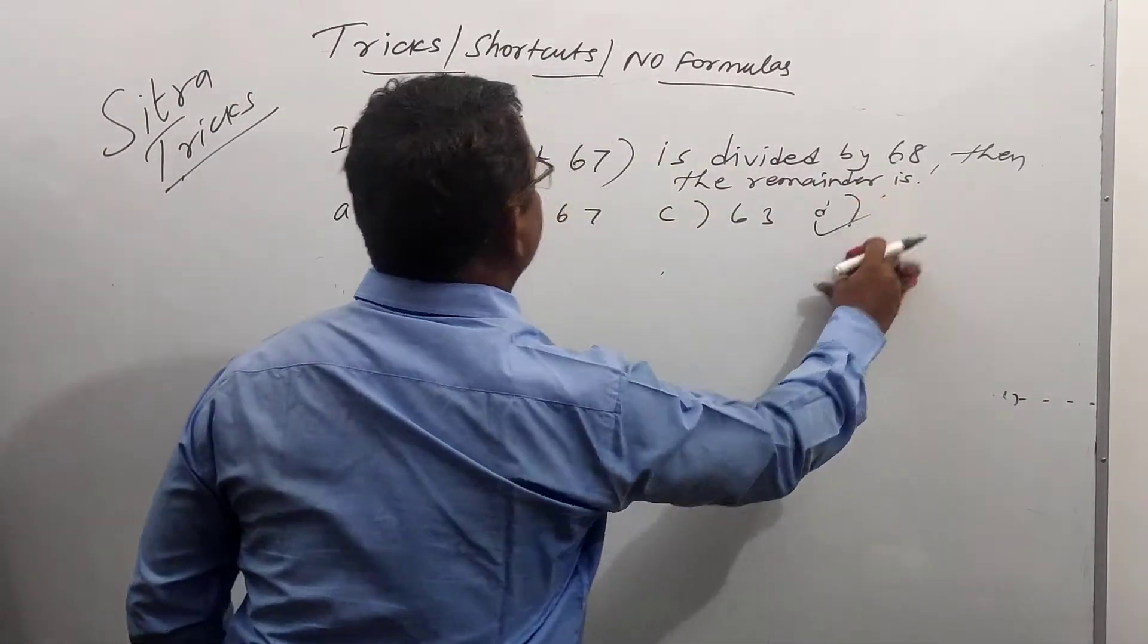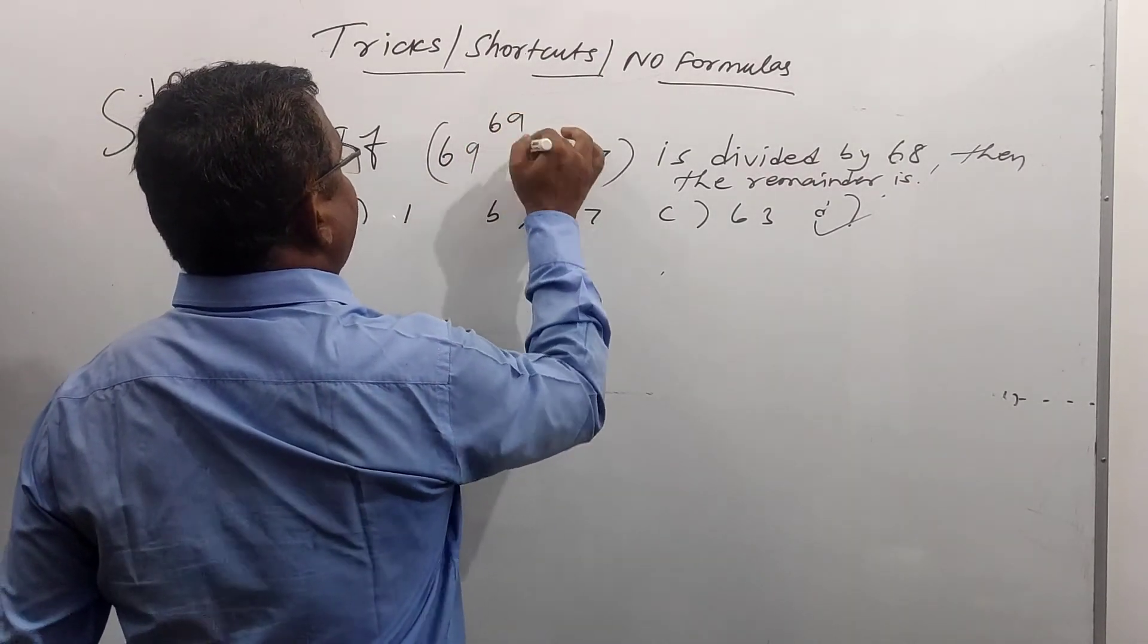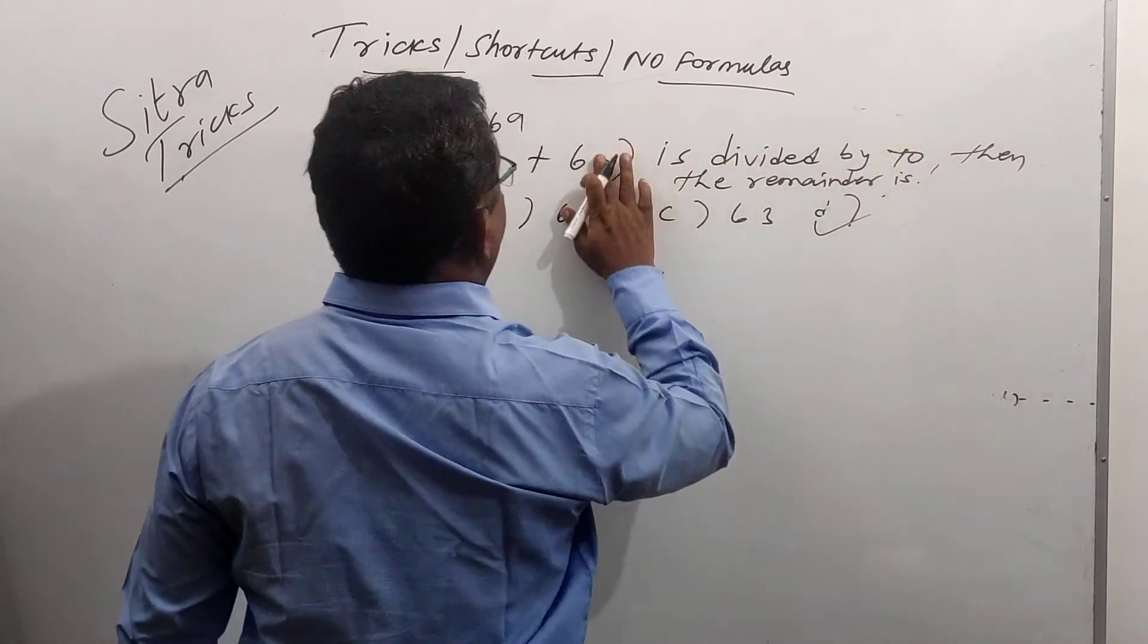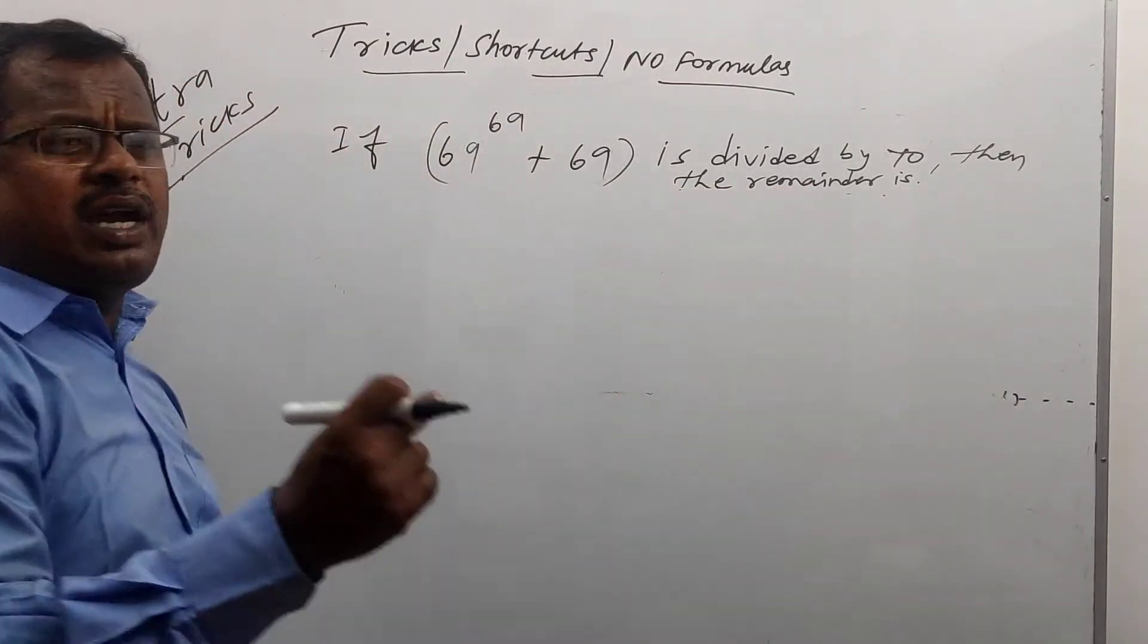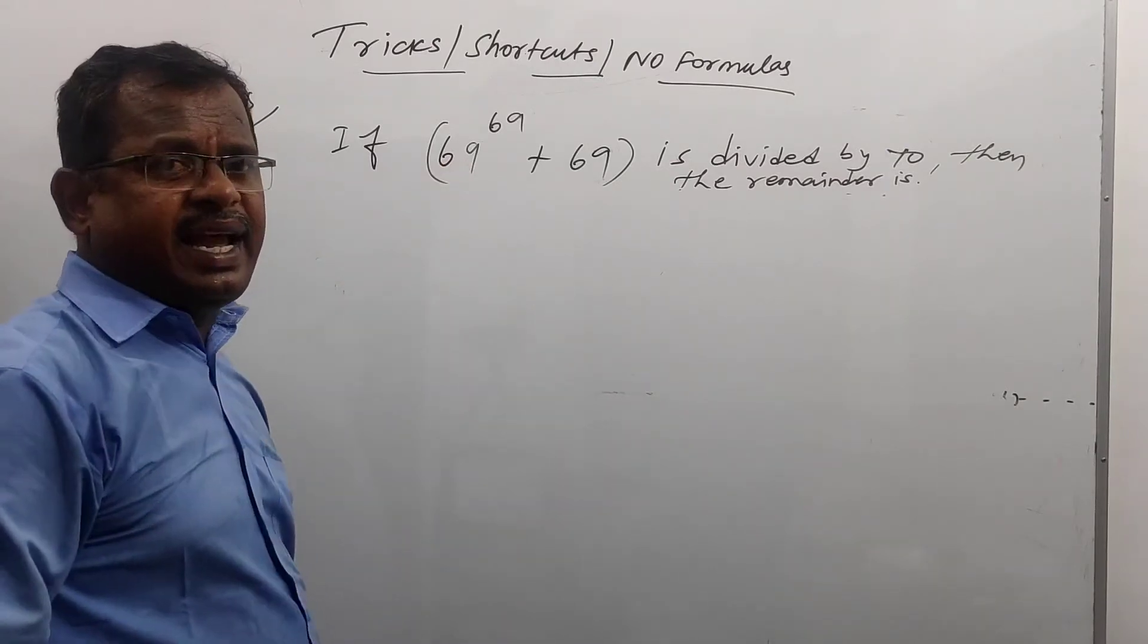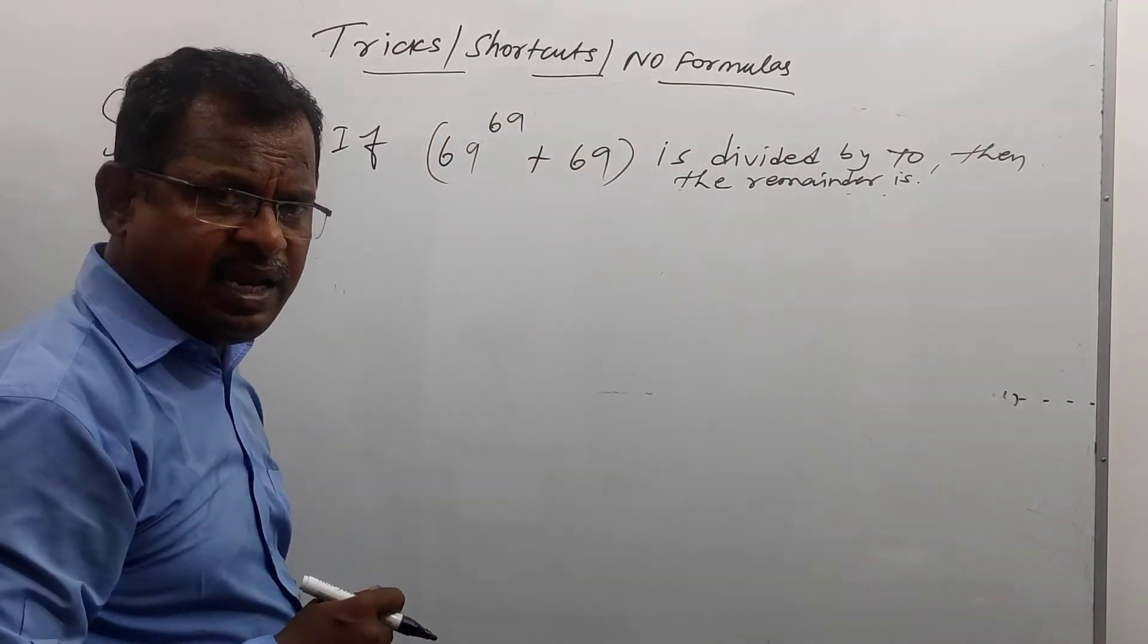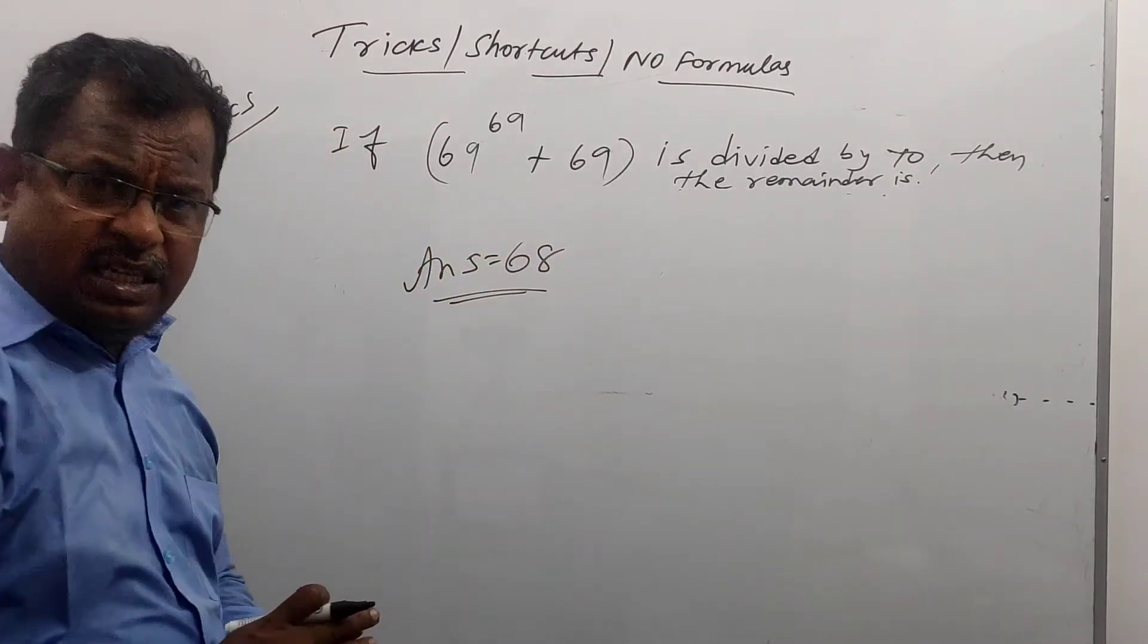Suppose 69 whole power 69 plus 69, divisible by 70. Divisible by 70. How much answer? It can write within 2 seconds. Within 1 second. 67. How to write the answer? 67. 70 minus 1. Minus 1 whole power 69. Minus 1. Minus 1 plus 69. 68. The answer is 68. That is all. The answer is 68. Within 2 seconds.